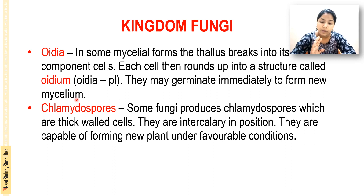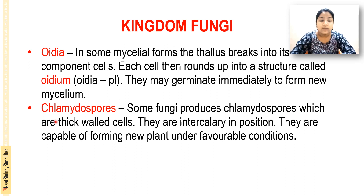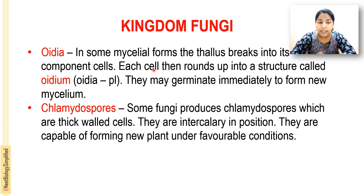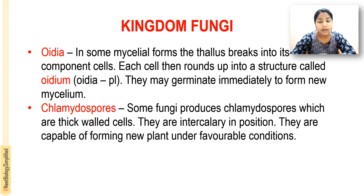Chlamydospores: some fungi produce chlamydospores, which are thick-walled cells. They are intercalary in position — located in the middle portion — and are capable of forming a new plant under favorable conditions. So oedia form from the thallus breaking into component cells, each rounding up and germinating into a new mycelium; and chlamydospores are thick-walled intercalary cells that germinate when favorable conditions arise.